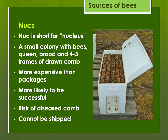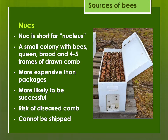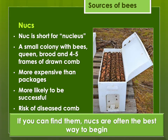Then there are what we call nucs — short for nucleus. A nucleus colony or nuc is a small colony of bees complete with a queen, brood, and four or five frames of drawn comb. They're more expensive than packages but much more likely to be successful because you already have an established colony that can expand. There is a risk of diseased comb — American foulbrood — so these should be inspected and certified. They're not really able to be shipped, so you'll probably have to drive somewhere to pick them up, or your bee club may bring them in. If you can find them, nucs are often the best way to begin — you have the strongest chance of success compared to starting with a package. But if you can't get a nuc, packages can work just fine also.